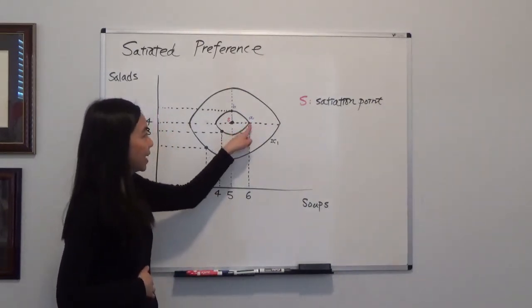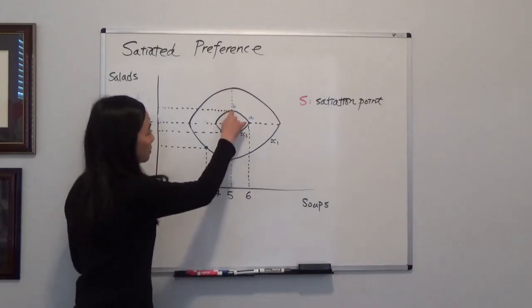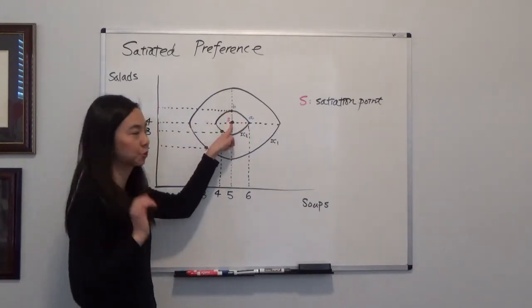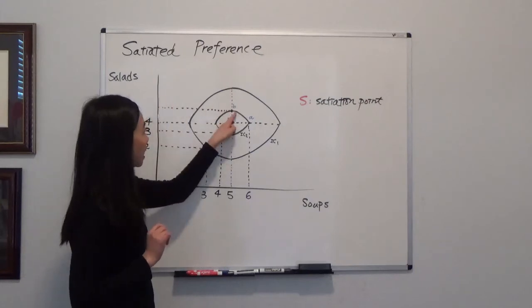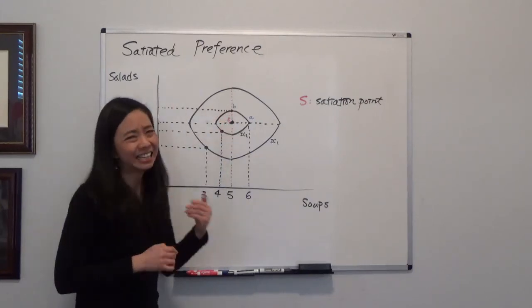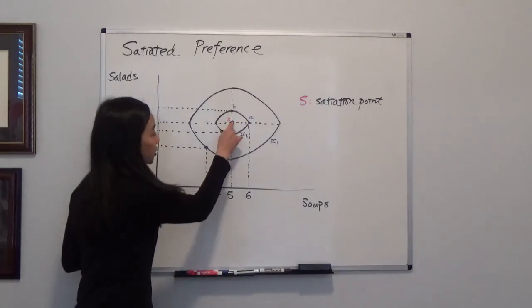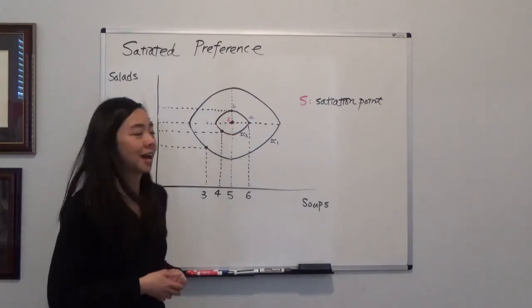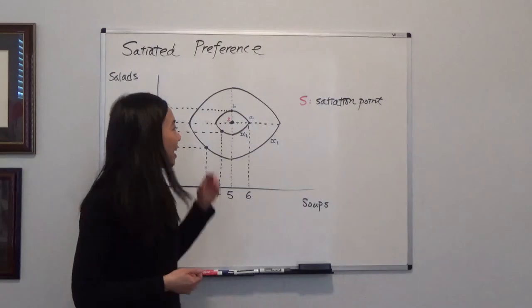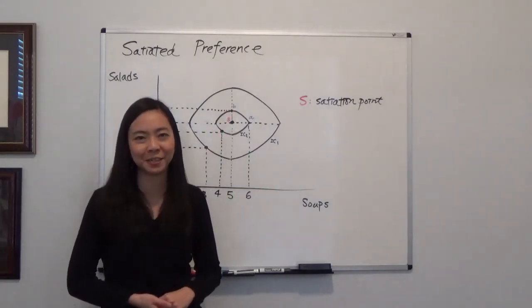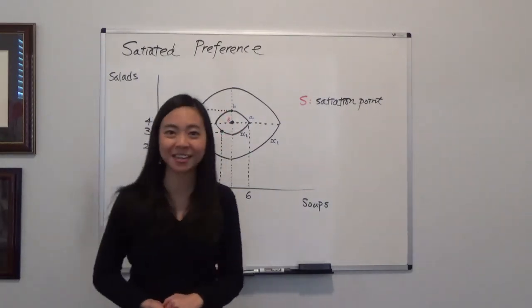So you can see point A and point B. Point B is that if you have one more salad and not one more soup. So you have, say, five salads and five soups. It's still too much for you. So you feel sick. And therefore, the satiation point is the point where you have the highest utility. Any more than that will actually lower your utility. So I hope this helps and I'll see you next time.